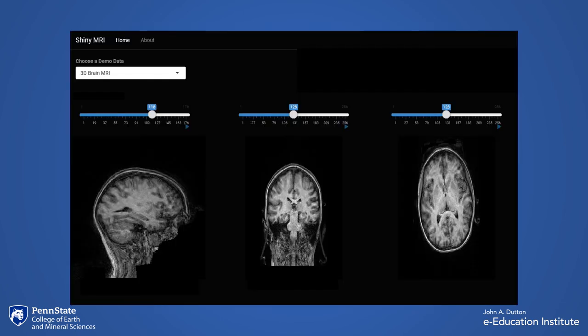This next example uses R Shiny to gracefully navigate through nearly 700 images. The slider to the left allows the user to scan through a series of 176 images moving from the left to right side of the brain. The slider in the middle allows the user to slide through 256 images from the front to the back of the brain, and the slider to the right allows the user to expand through 256 images from the top to the bottom of the brain.